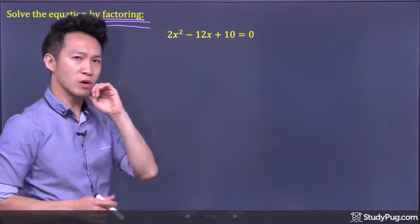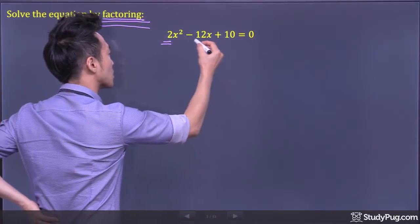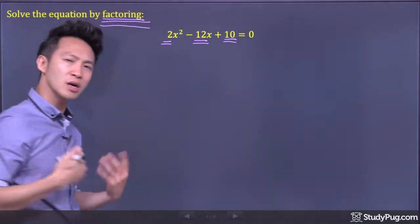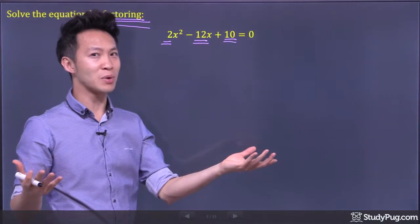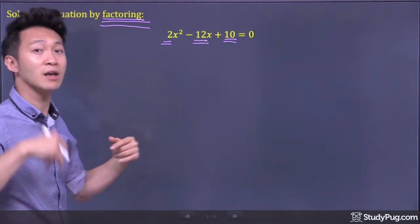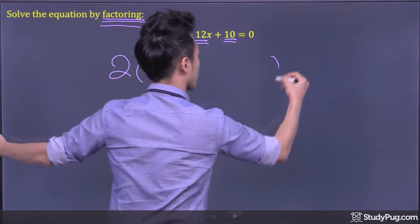So to factor this trinomial, the first thing you're going to ask yourself is, between the numbers here, is there a common factor? Well all three numbers are even numbers, so that means they must be divisible by 2. So let's factor out 2.